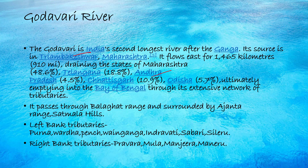The Godavari flows through Maharashtra, Telangana, Andhra Pradesh, Chhattisgarh, and Odisha. One tributary — Pench and Kanha — originates from Madhya Pradesh. It empties into the Bay of Bengal through its extensive network of tributaries.